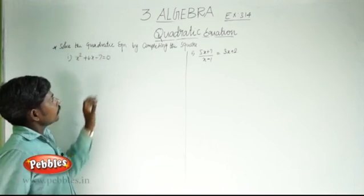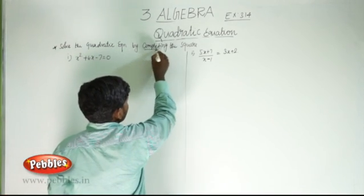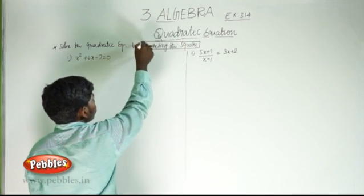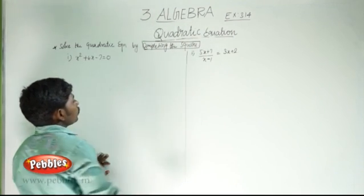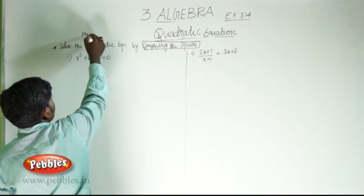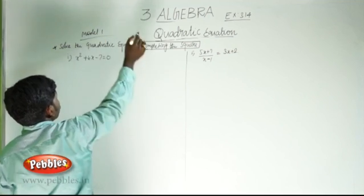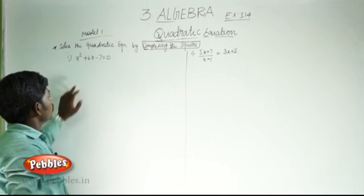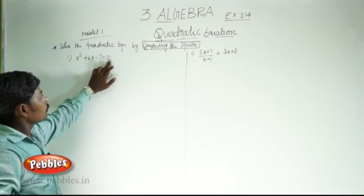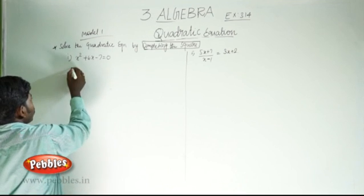Solve the quadratic equation by completing the square. Method 1 is completing the square, model 1. The quadratic equation is x squared plus 6x minus 7 is equal to 0.